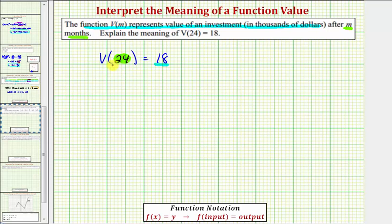So because V of 24 equals 18, we know that after 24 months, the value of the investment is 18,000 dollars. And let's go ahead and write that out.